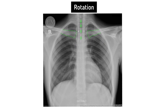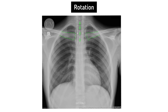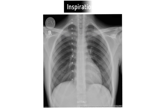For rotation, the clavicles should appear symmetrical and be seen as equal length. The distance between the thoracic spinous process and the clavicular heads should be equal. If there is rotation, the mediastinum may look abnormal. Here, the x-ray shows minimal rotation — compare X and Y.